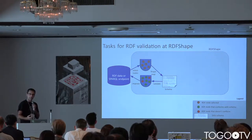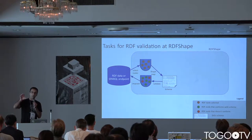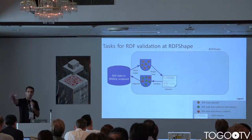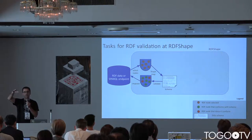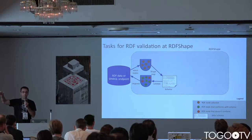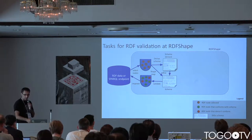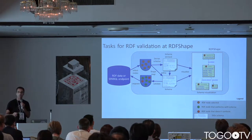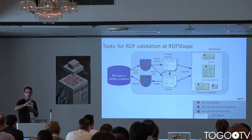Some other tasks that users asked us to add: they wanted to select a set of nodes and from those nodes infer the common schema. For example, imagine you have a SPARQL endpoint with data about people and you want to infer the shape of those people. You can also do that with RDF Shape. Users also asked us to visualize ShEx expressions using UML.